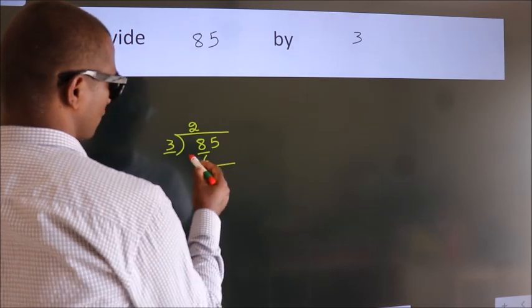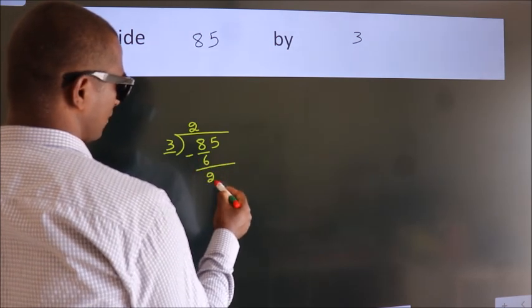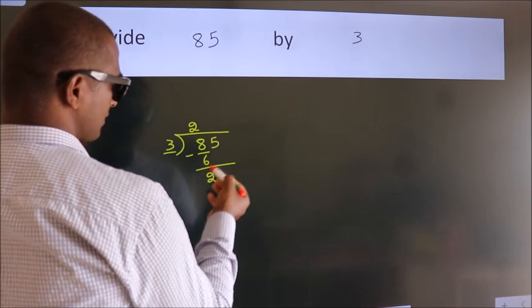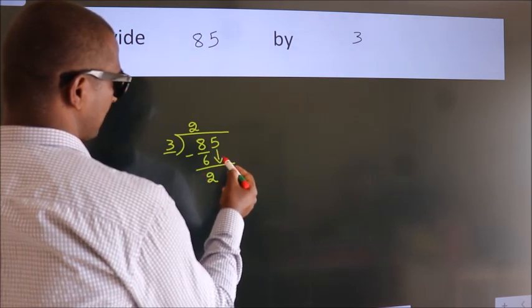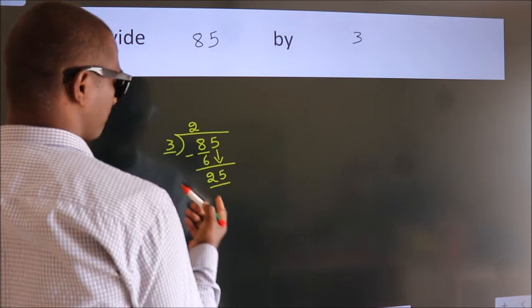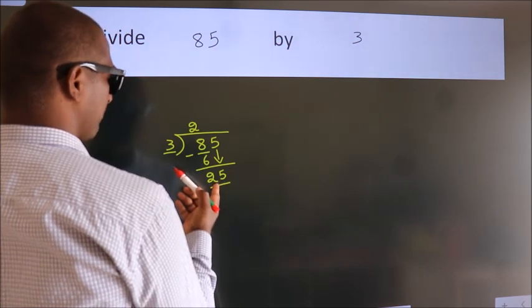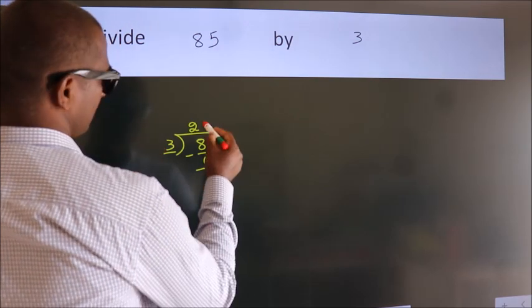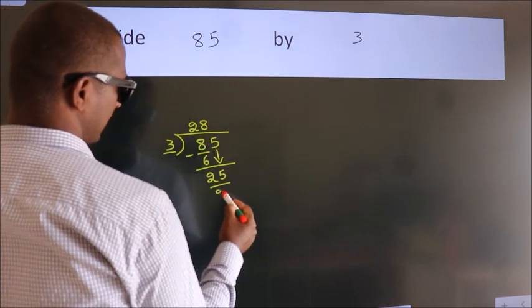Now we subtract and get 2. After this, bring down the next number. So, 5 down. So, 25. A number close to 25 in the 3 table is 3 times 8, which is 24.